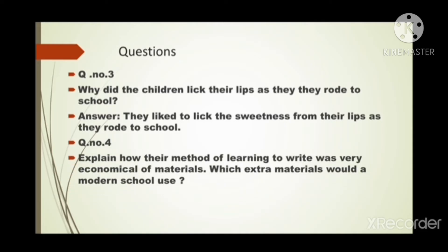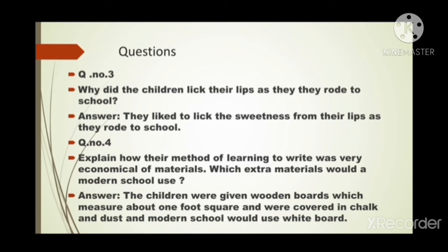Next question: Explain how their method of learning to write was very economical of materials. Which extra materials would a modern school use? Answer: The children were given wooden boards which measured about one foot square and were covered in chalk and dust, while modern schools would use whiteboards.